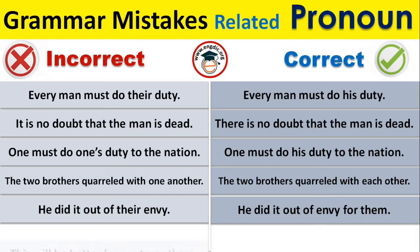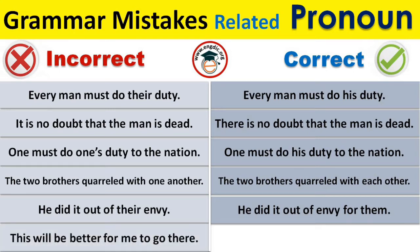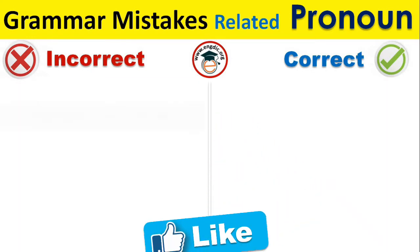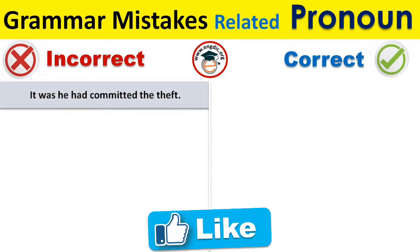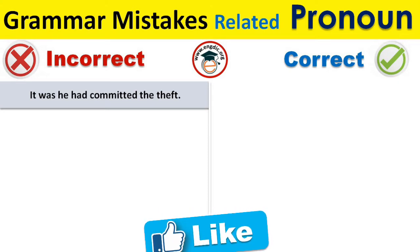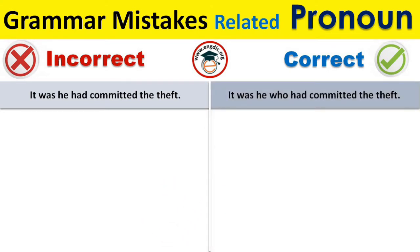'This will be better for me to go there' is incorrect. The correct sentence is 'It will be better for me to go there.' Also, 'It was he had committed the theft' is incorrect; the correct sentence is 'It was he who had committed the theft.'